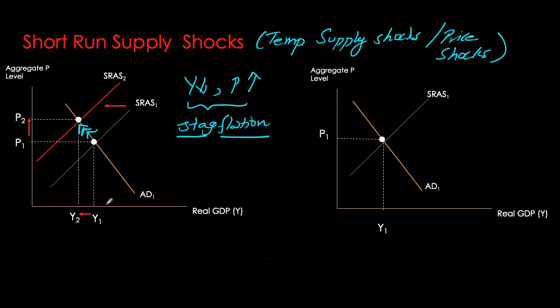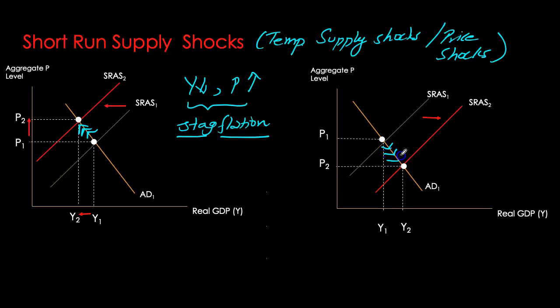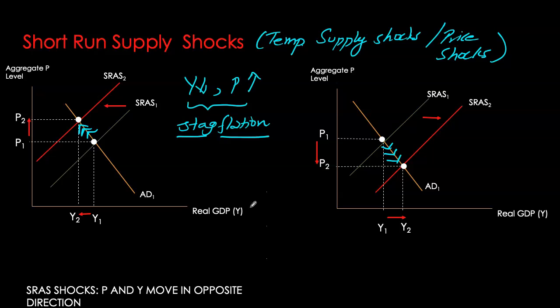On the other hand, if you have a positive supply shock, your short-run aggregate supply curve is going to increase and shift to the right. With this increase, we see downward pressure on prices, aggregate output demanded increases, and at our new equilibrium, our GDP is higher than before and price level has gone down. Note that in the face of supply shocks, price and GDP are always moving in opposite directions. In our demand shock, price and GDP were moving in the same direction.